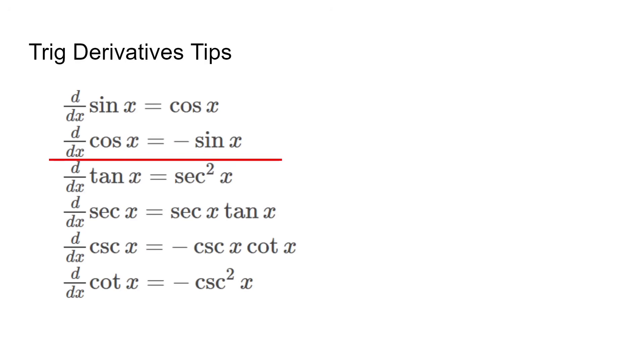All of the functions starting with co, such as cosine, cosecant, and cotangent, have negative derivatives as well. With these, you should be able to memorize them quicker.